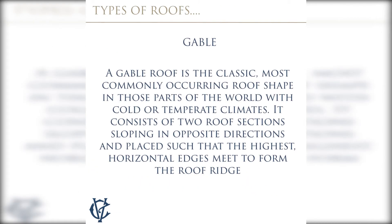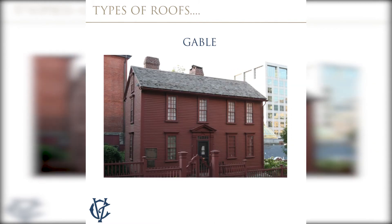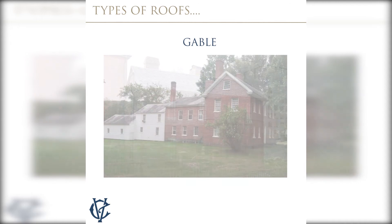A gable roof is the classic, most commonly occurring roof shape in those parts of the world with cold or temperate climates. It consists of two roof sections sloping in opposite directions, placed such that the highest horizontal edges meet to form the roof ridge.